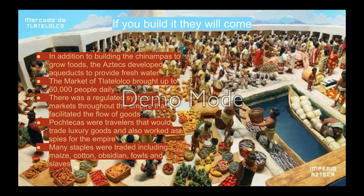This is the market in Tlatelolco. In addition to building chinampas, the Aztecs developed aqueducts to provide fresh water, sustaining a large population. The market of Tlatelolco brought up to 60,000 people daily. There was a regulated system of markets throughout the empire that facilitated the flow of goods. Pochtecas were traveling merchants who traded luxury goods and also worked as spies for the empire. Many staples were traded, including maize, as well as thousands of slaves.